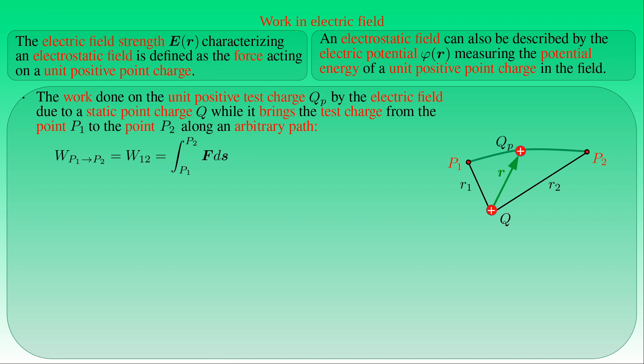The work W done by the field is simply equal to the line integral of the electrostatic force F acting on the test charge QP with respect to arc length S along the path between P1 and P2. By definition, the force F acting on QP is the product of the charge QP and the electric field strength E. Without loss of generality, we suppose both Q and QP are like charges, so F always has the same direction as the position vector pointing from Q to QP. The amount of QP is constant and can be factored out from the integral.